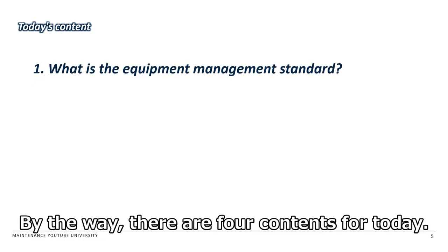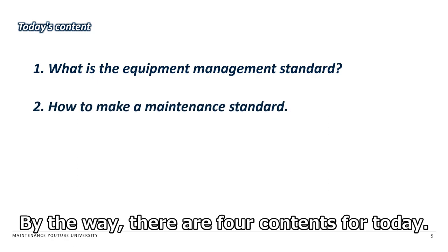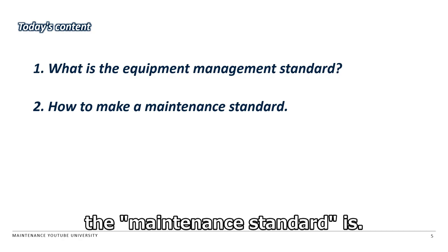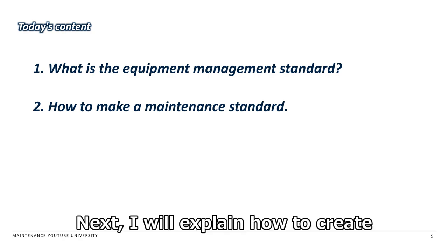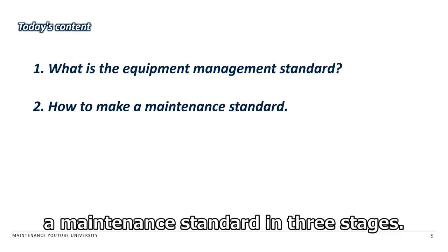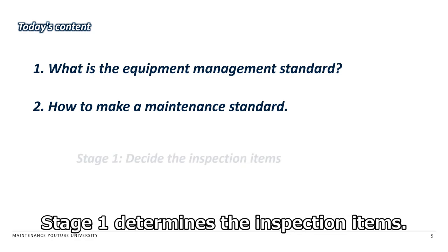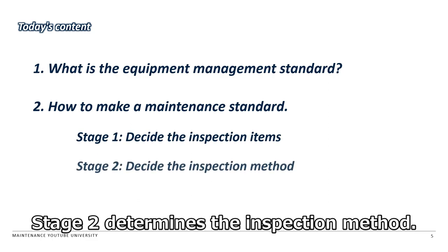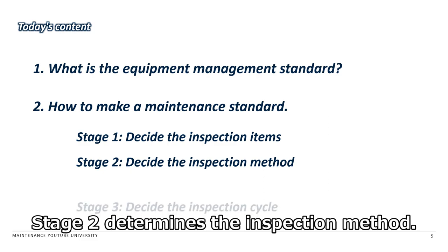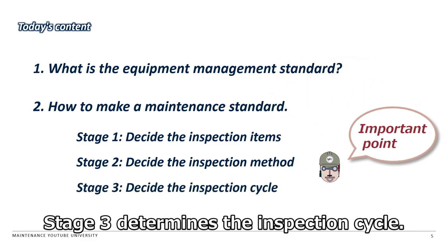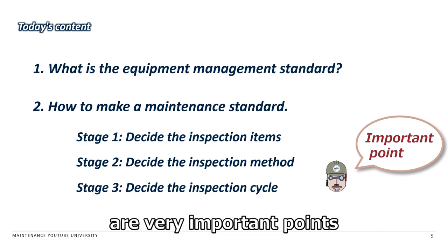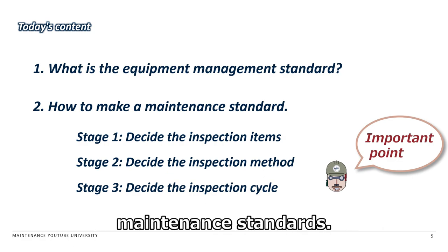There are four contents for today. First, I will explain what the maintenance standard is. Next, I will explain how to create a maintenance standard in three stages: Stage 1, Determine the inspection item; Stage 2, Determine the inspection method; Stage 3, Determine the inspection cycle. These inspection items, inspection method, and inspection cycle are very important points for improving the accuracy of maintenance standards.